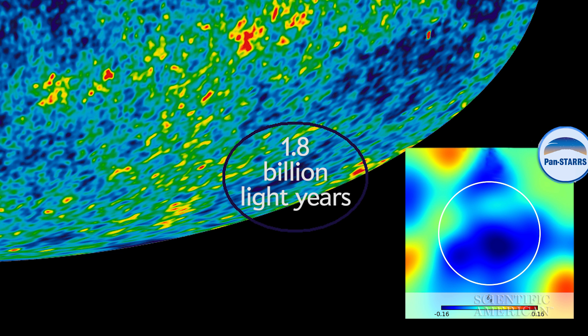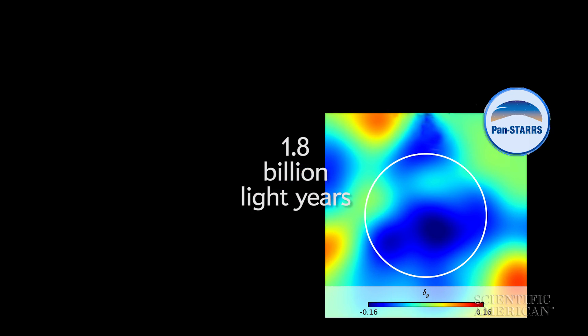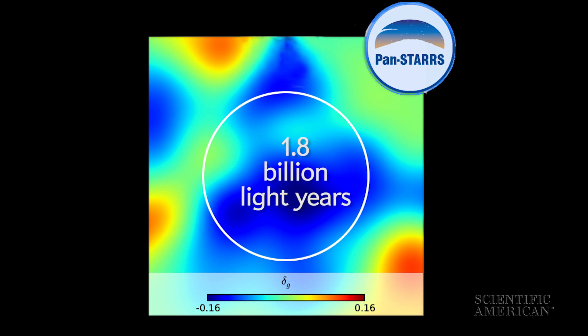The supervoid extends 1.8 billion light-years across, making it perhaps the largest structure known in the cosmos, according to a report in the Monthly Notices of the Royal Astronomical Society.